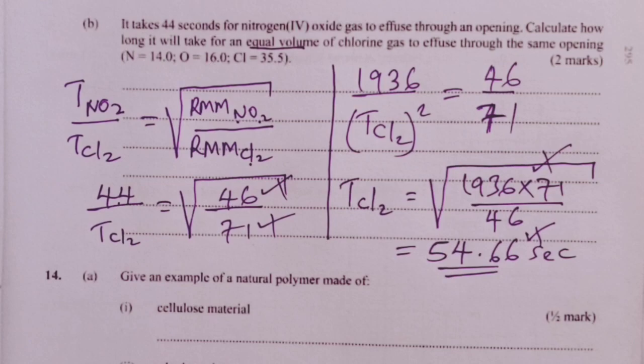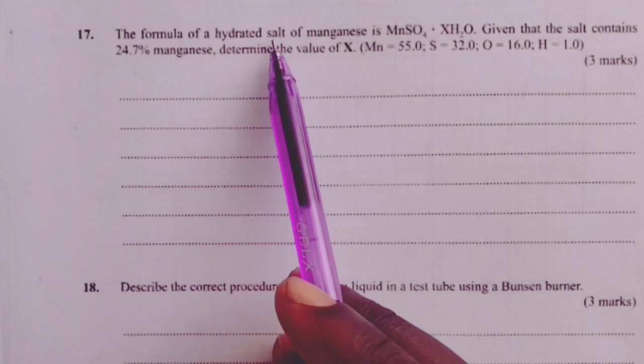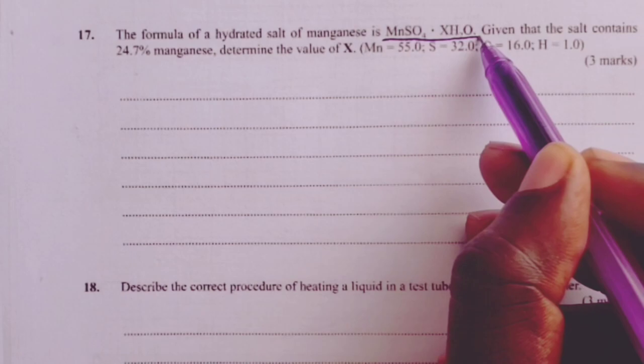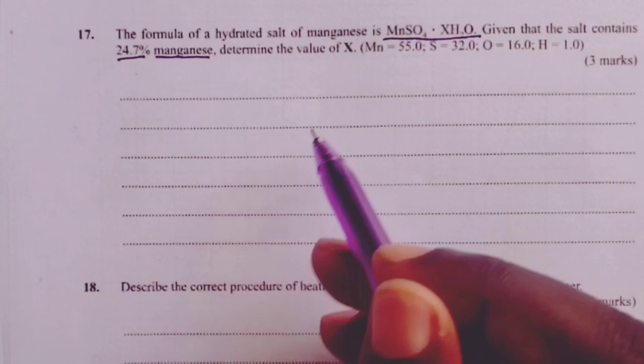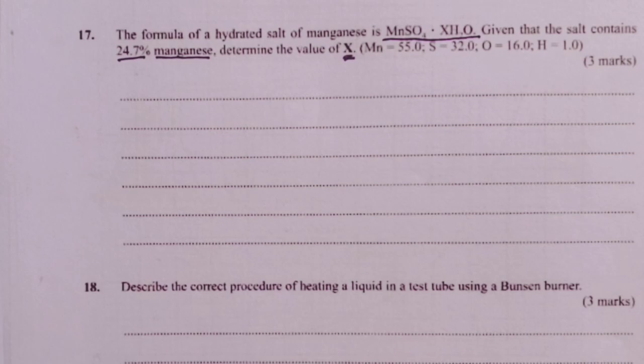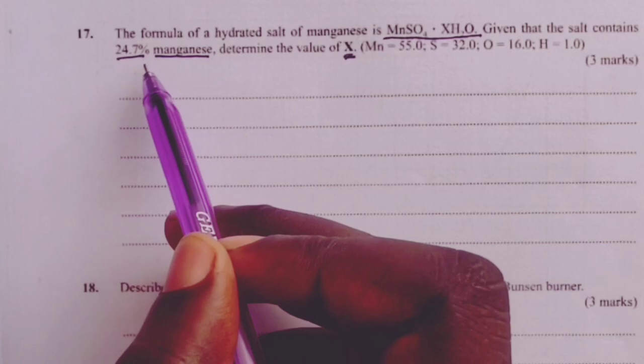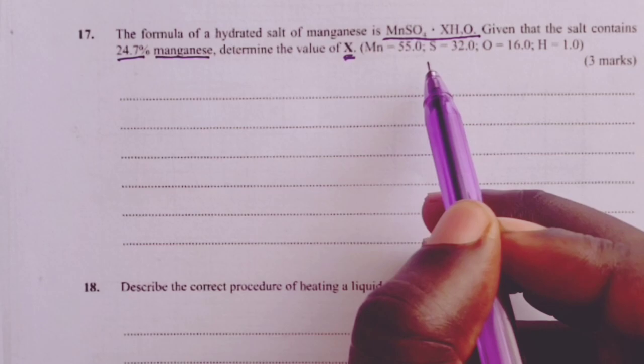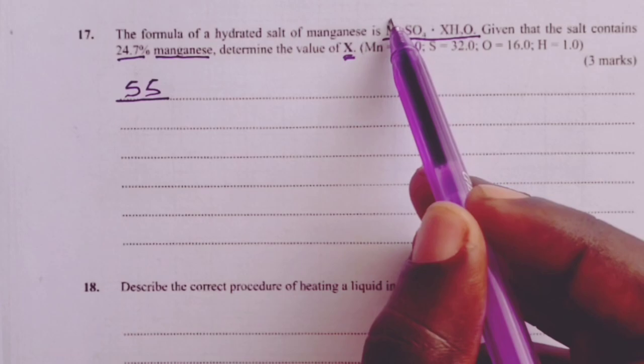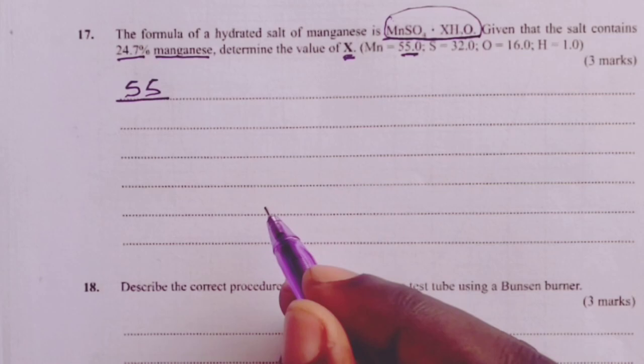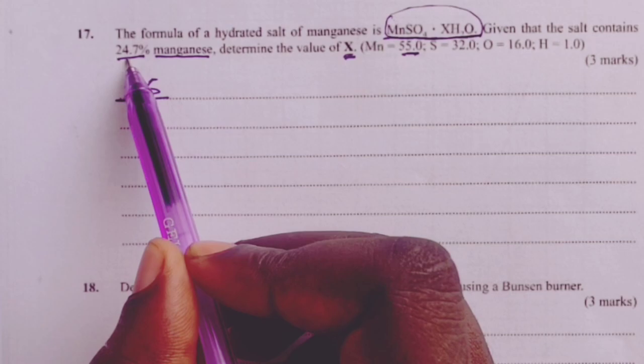We proceed to question number 17. Question 17 still tested the topic of the mole. The formula of a hydrated salt of manganese is manganese sulfate X water. Given that the salt contains 24.7% manganese only, you are expected to determine the value of X. A very tricky question, but so easy. We would use the atomic mass of manganese which has been given here as 55.